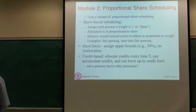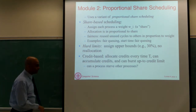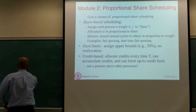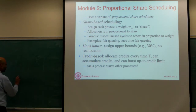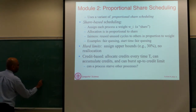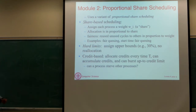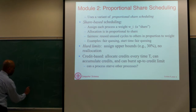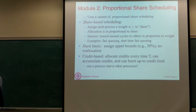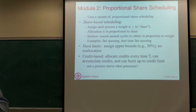If there are n containers and you have given them weights w1, w2, ..., wn, the CPU share of the ith container is its weight wi over the summation of all the weights — that's the fraction it's going to get. So if it was 1 to 1 to 1, each one gets one-third.